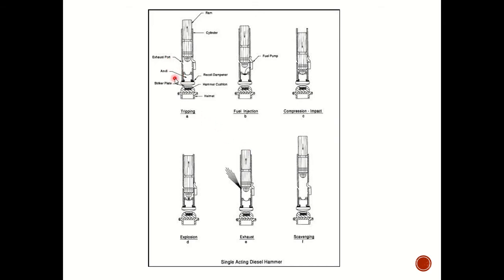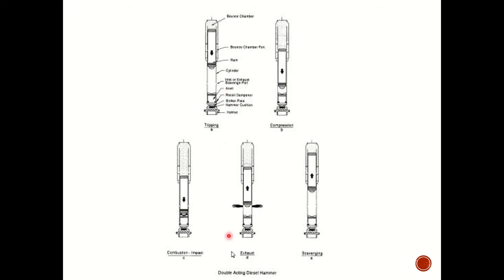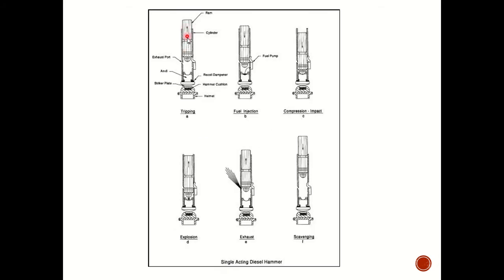Here's an analogy. On an open-ended hammer, once the explosion happens, the hammer flies up in the air and nothing stops it. This is a single acting diesel hammer — there's a fuel pump, by gravity it falls down, once it explodes, it exhausts and shoots back up, then falls back down. For a double acting — it's enclosed — the explosion happens, hits the top and shoots it back down. The most common diesel hammers are open-ended.